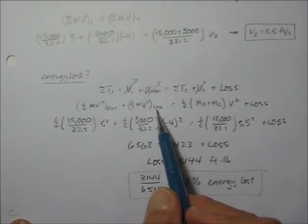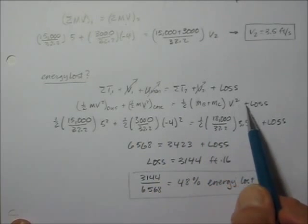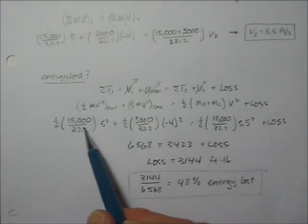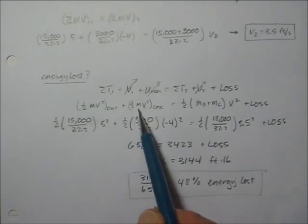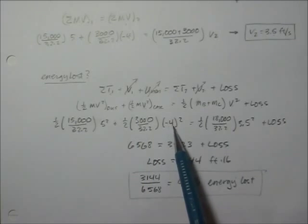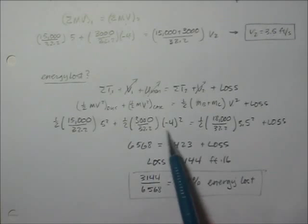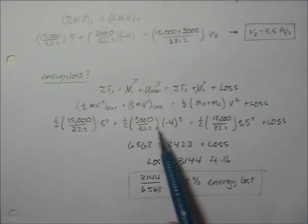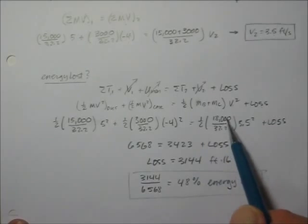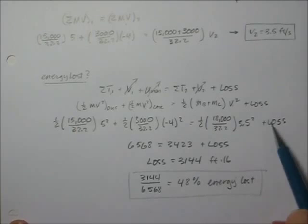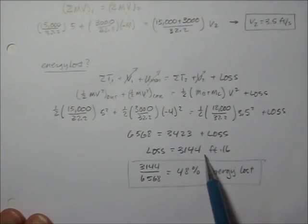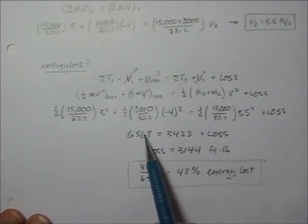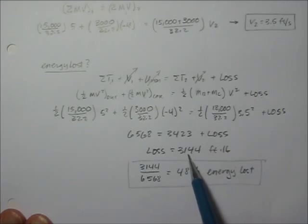We have (1/2)mv² of the bus plus (1/2)mv² of the car equal to (1/2) times the masses together times their common velocity afterward, with the residual being the loss. Filling in the values: mass of the bus, velocity 5; mass of the car, velocity negative 4 — when we square it, that term becomes positive, because energy is a scalar and you just add the energies together. At the end, (1/2)mv² with ending speed 3.5 squared gives a loss of 3,144 foot-pounds. Comparing that to the beginning energy, 48% of the energy was lost during the collision — that's a pretty nasty crash.